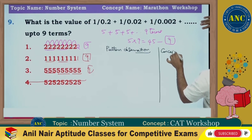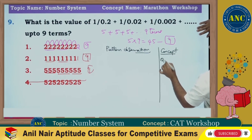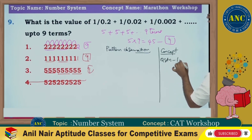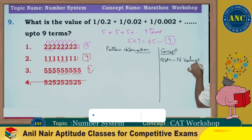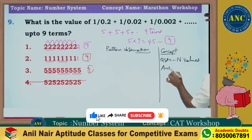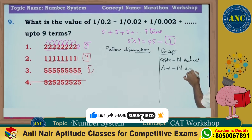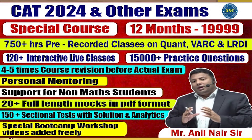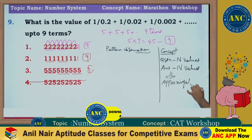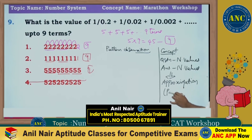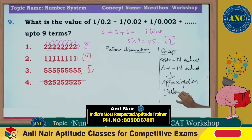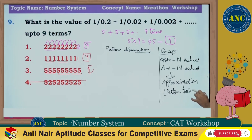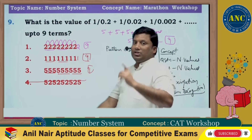If the question contains numerical values, the answer also contains numerical values. You can use the approximation method, which we also call the pattern recognition method or pattern observation method. You can use pattern recognition when the question contains numerical values.